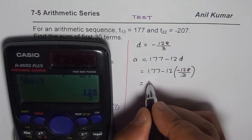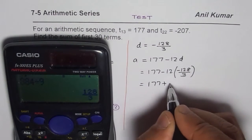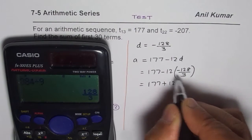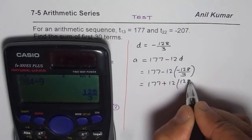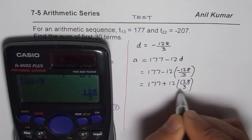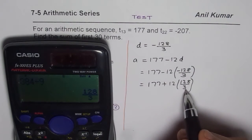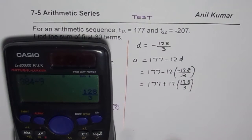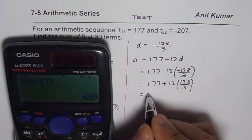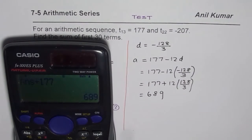So, 177 + 12(128/3). We'll use calculator: 128/3 × 12 + 177 = 689. So we now know a = 689.